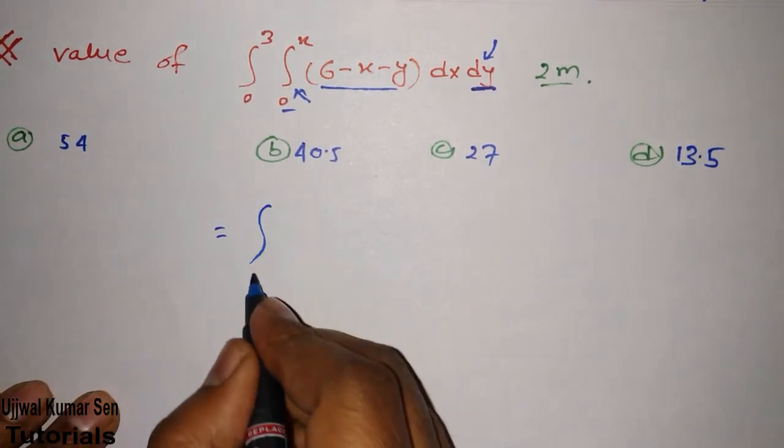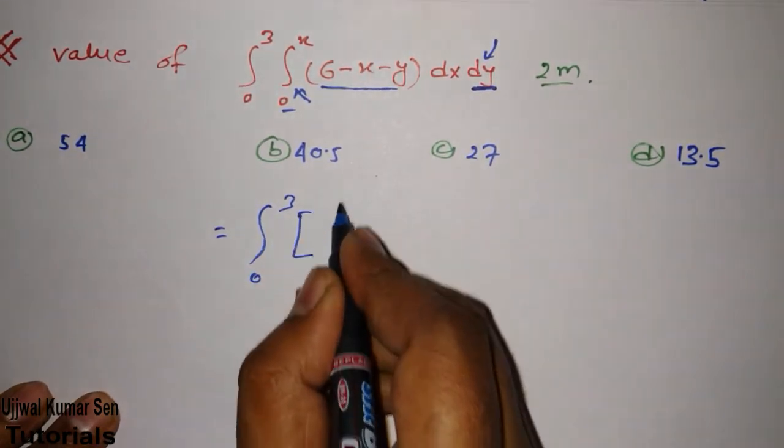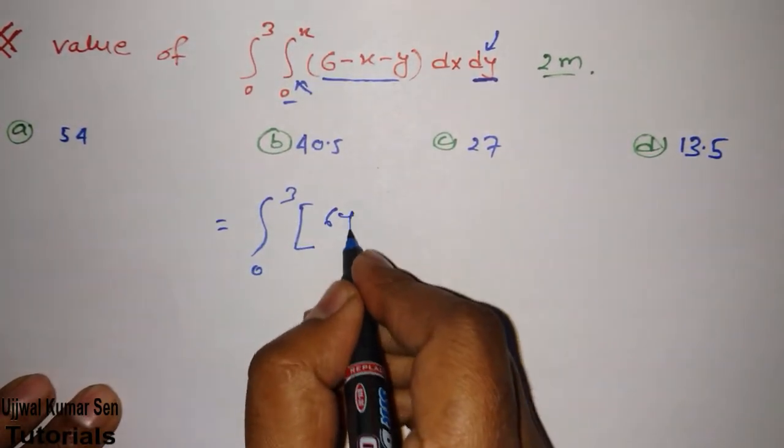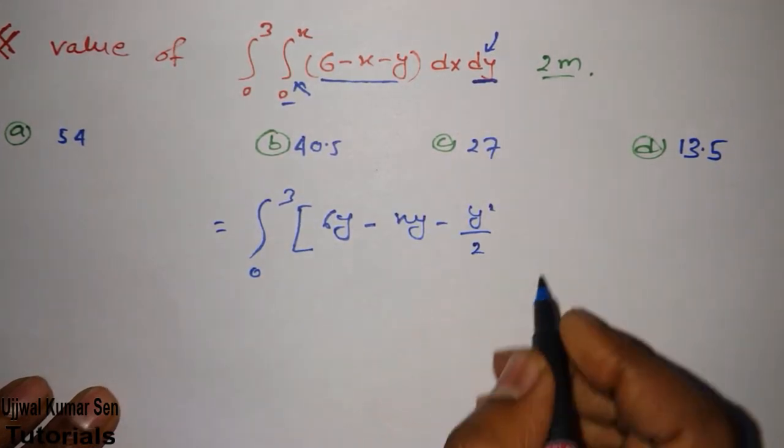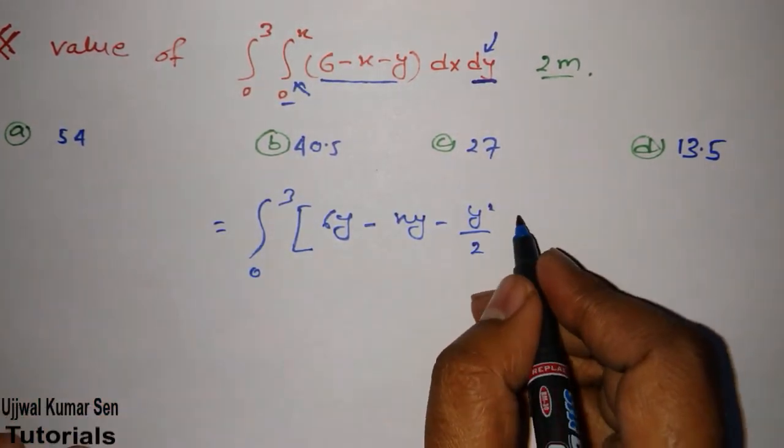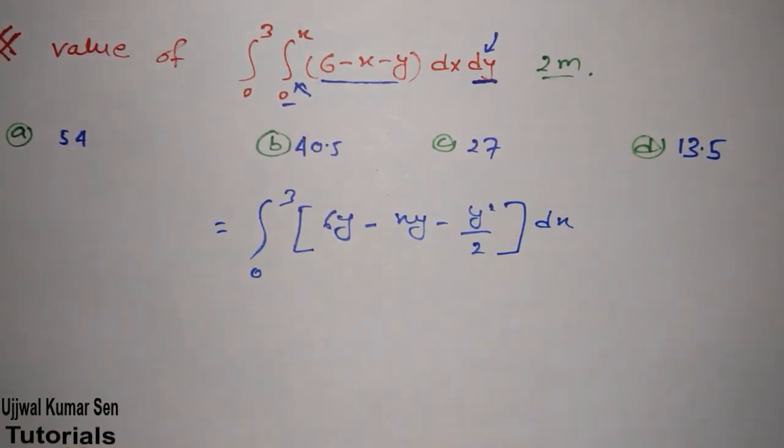Now let's get started. First we'll do integration of this for dy. So what we'll get basically is 0 to 3, there is constant term so 6y, xy, y square by 2, a simple integration process I am doing and it's dx. There is no rocket science required for doing this.